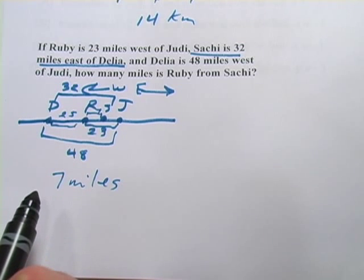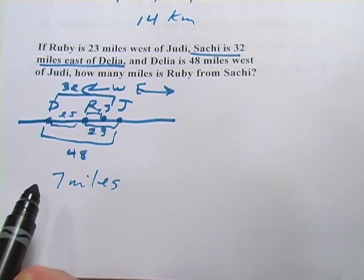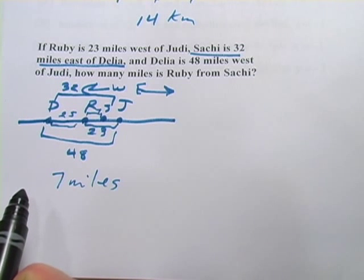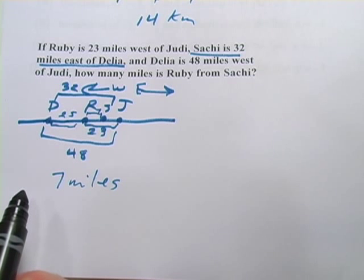It's a little bit tricky, but once you label everything you know, you can figure out the parts you don't know by subtracting distances, and those will work out in the end. That's a little bit of practice with problems dealing with midpoints and number lines.